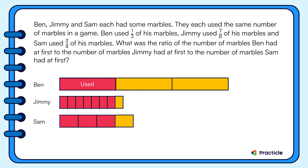Now that we have our model, let's take a look at it and think about what we can tell. Ben's one unit, Jimmy's seven units, and Sam's three units represent the same number of marbles. To make things easier, let's make these units the same size.